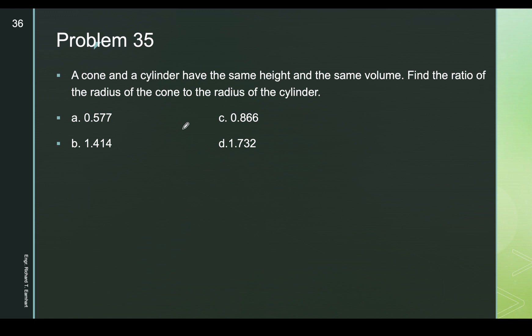Problem 35: a cone and a cylinder have the same height and the same volume. Find the ratio of the radius of the cone to the radius of the cylinder. Let's say the cone has radius r₁ and the cylinder has radius r₂, and both have height h.